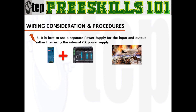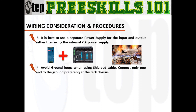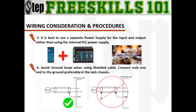Having a separate power supply would prevent direct damage to the PLC when overloading occurs. Later on, modifications and add-ons can occur in a control panel, so having a separate power supply can give you more flexibility for any changes. Ground loops are a major cause of noise, hum, and interference in audio, video, and computer systems. So avoid ground loops when using shielded cable — connect only one end to the ground, preferably at the rack chassis.